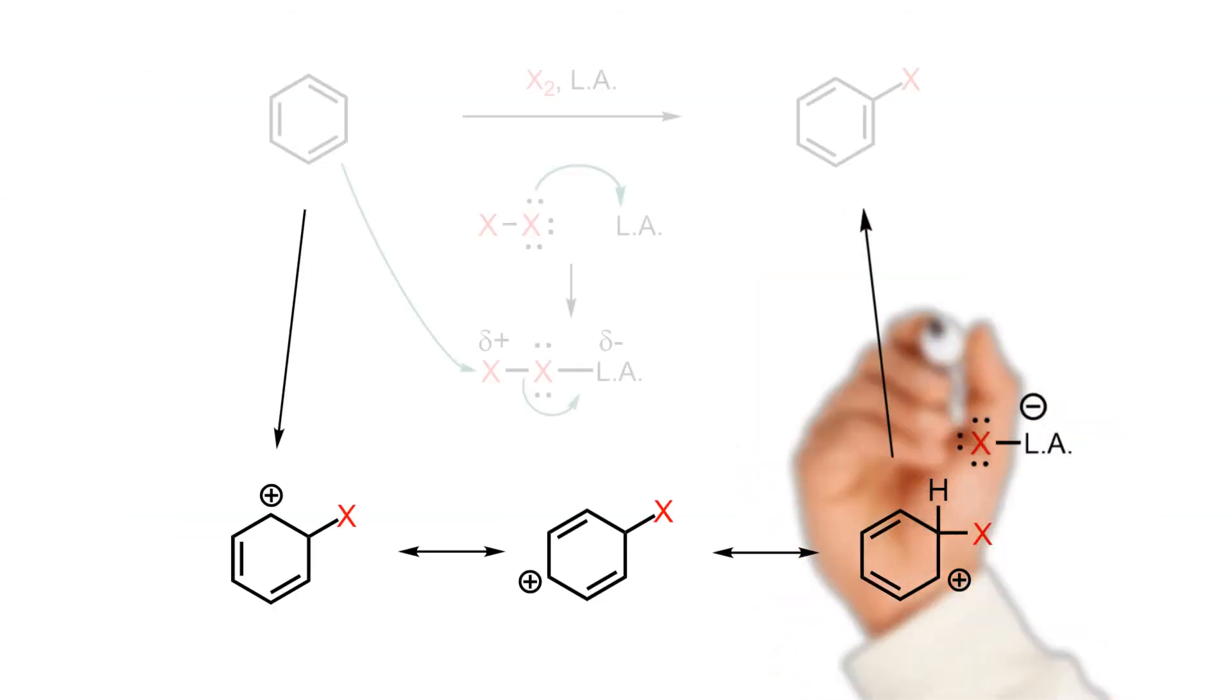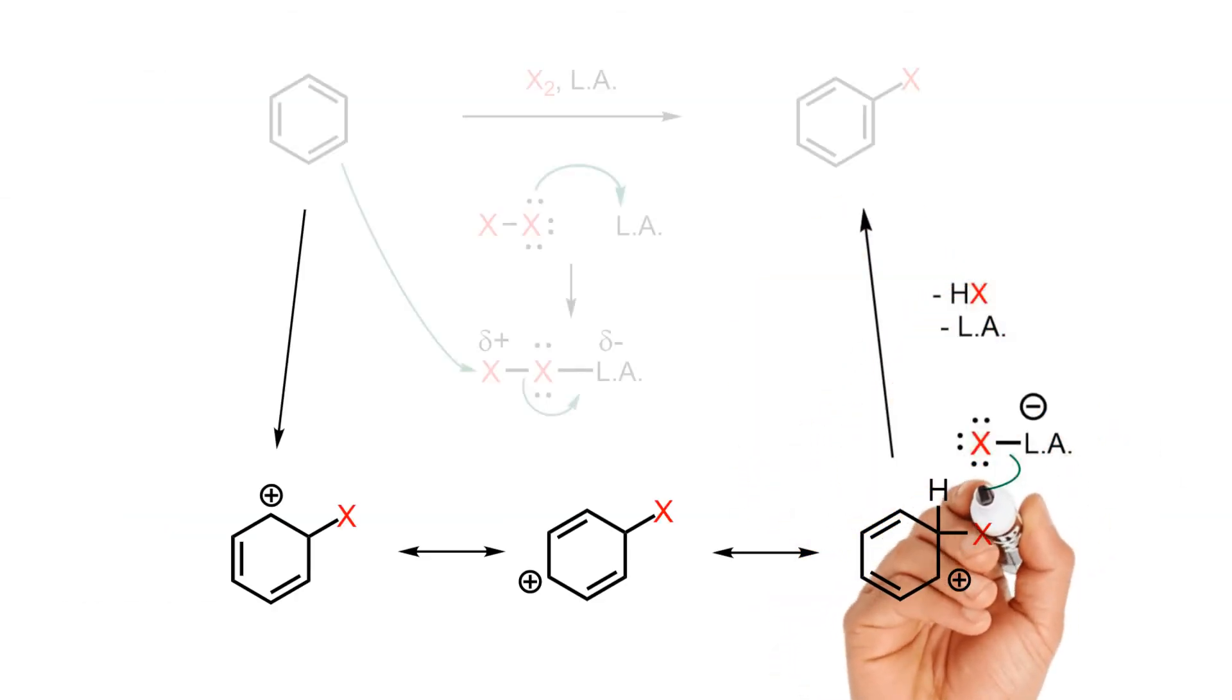In order to regain aromaticity, the second step involves the halide complex deprotonating the intermediate sigma complex. This provides the halobenzene product, a molecule of HX byproduct, and the Lewis acid catalyst, which is then free to recycle back into the process.